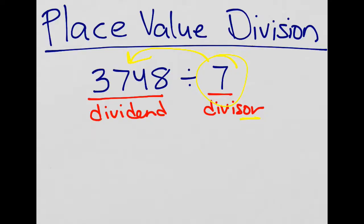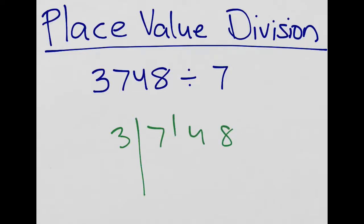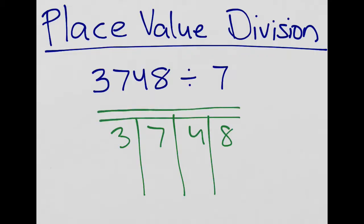To use the place value division strategy, we set up the information we have on a place value chart. I take my number 3,748 and set it up like a place value chart — sometimes kids call it an HTO chart, but for this number HTO is not enough. This would really be a thousands, hundreds, tens, and ones chart. The other chart we're going to use is called a table of multiples.